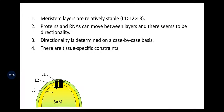As we talk about the stability of the layers, L1 is the most stable compared to L2, and L3 is the least stable layer. Proteins and RNAs can move between the layers and there seems to be directionality, which is determined on a case-by-case basis, and there are tissue-specific constraints.